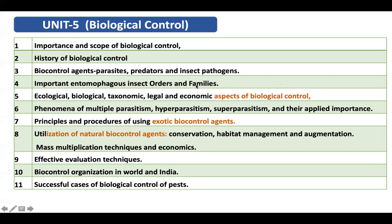The fourth subtopic is important entomophagous insect orders and families relevant to biological control. Important orders include Hymenoptera, Coleoptera, and Hemiptera. In Hymenoptera, important families are Chalcididae, Trichogrammatidae, and Evaniidae. In Coleoptera, the Curculionidae and Coccinellidae families are important. You need to study the specific features that make these insects entomophagous.